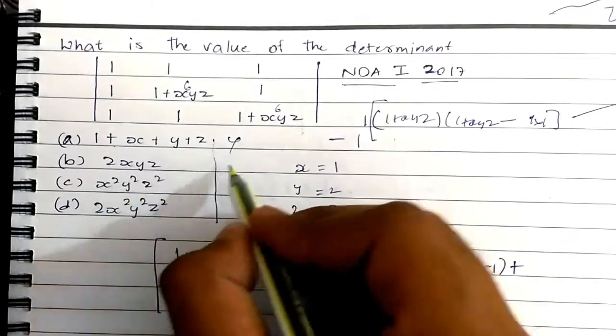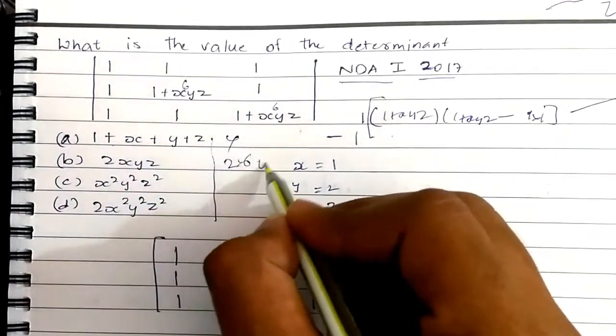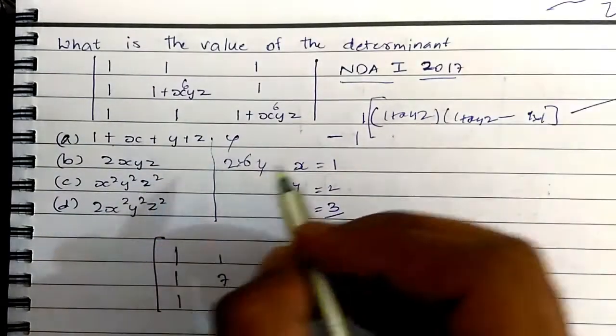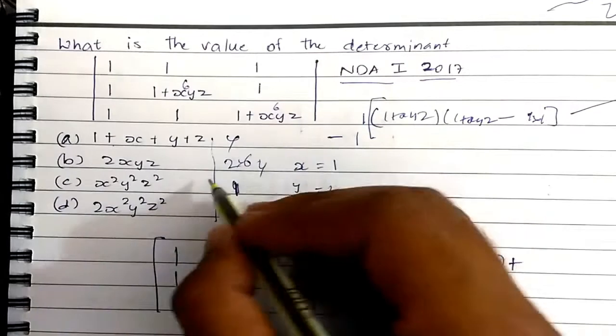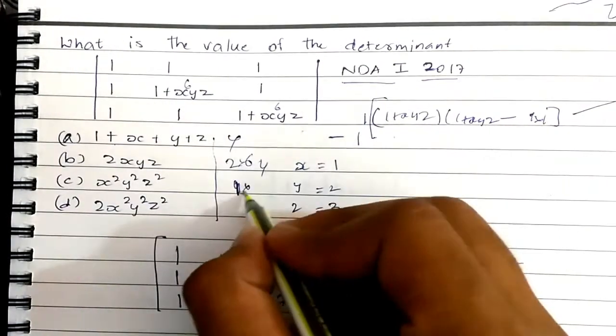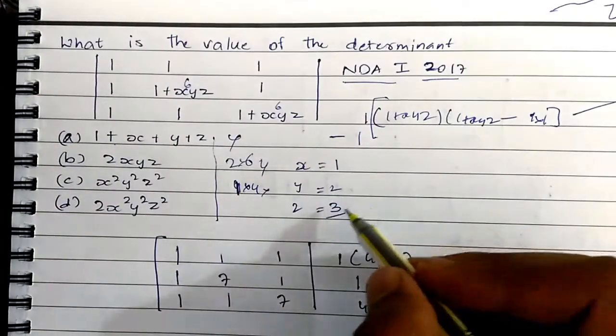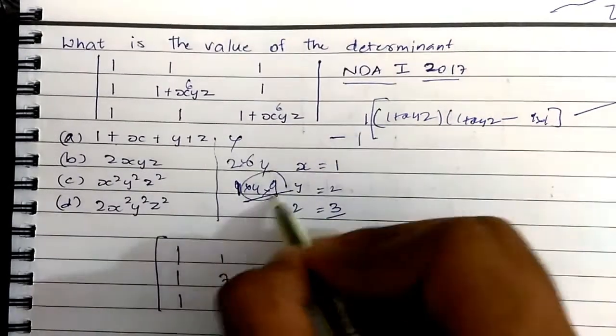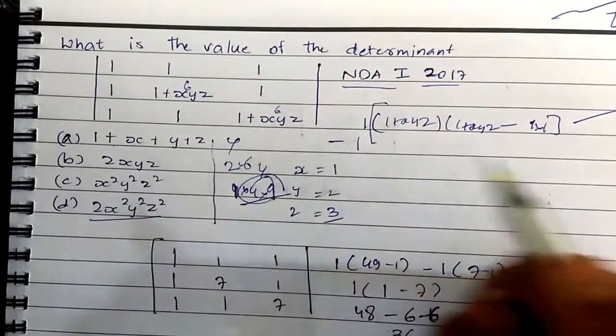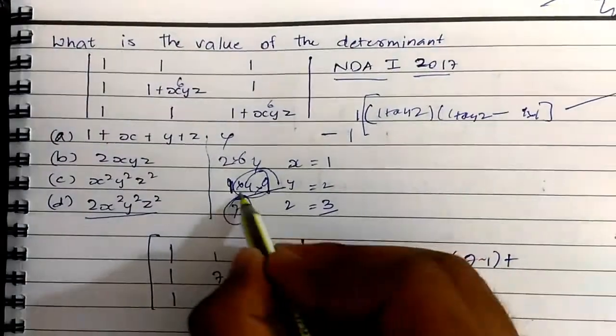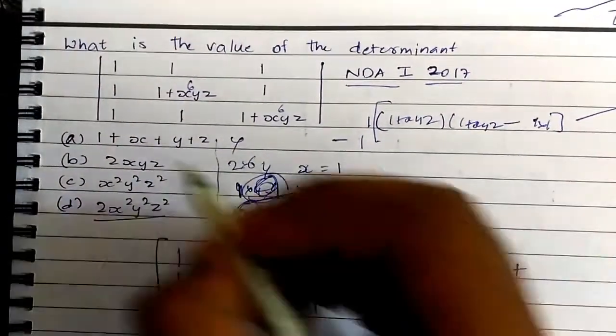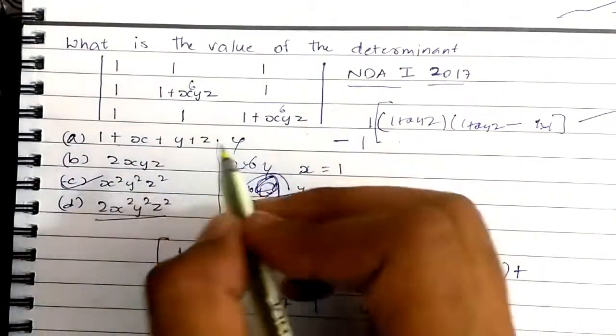Check from this which is 36. Here 1+x+y+z, it cannot be 36. 2xyz, 2 into 6 is 12, so this is also not the answer. x²y²z², x² is 1, y² is 4, z² is 9. 1 times 4 times 9 is 36. And if you check here 2x²y²z², it'll become 72. So 36 and 36, these both are matching, so our answer is option C.